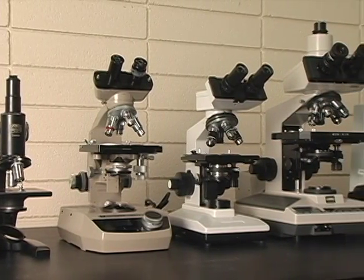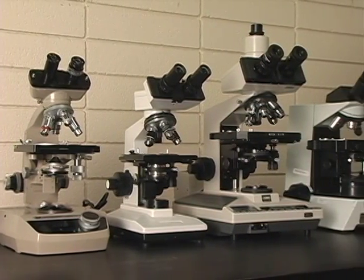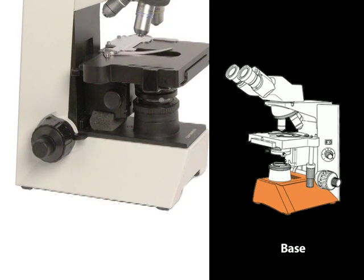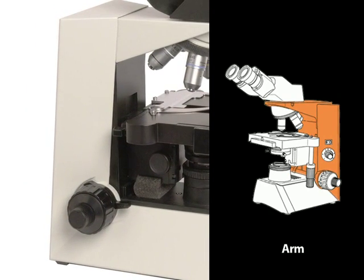Just as there are many kinds of stereomicroscopes, there are many kinds of compound microscopes. However, each of them has a base that supports the microscope and an arm that connects the base to the rest of the microscope.